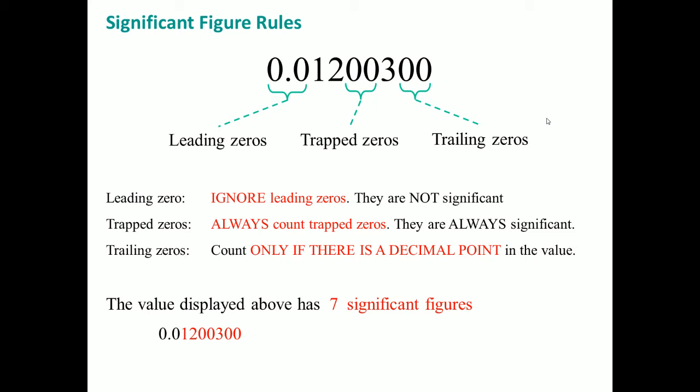The display here that you have, 0.012000300, has seven significant digits. The reason why is because you can move this dot left one, two. And if you count it here: one, two, three, four, five, six, seven.